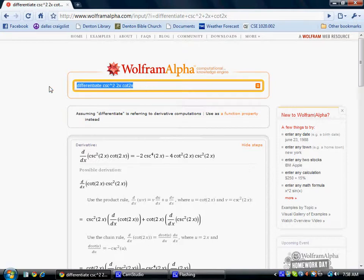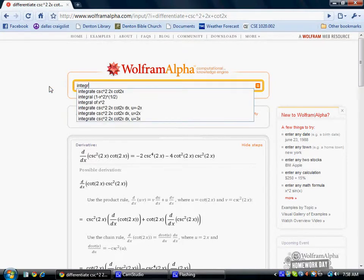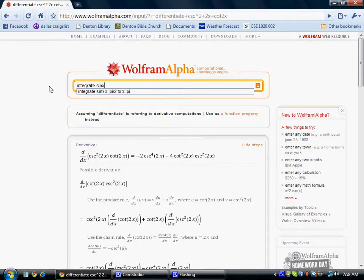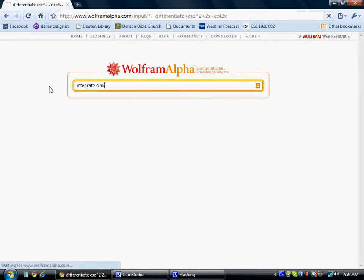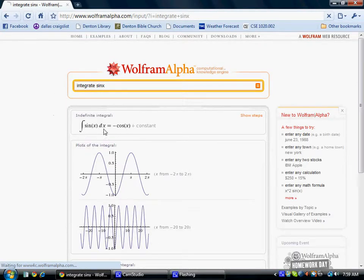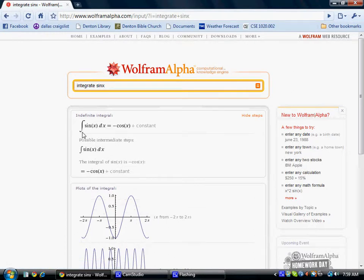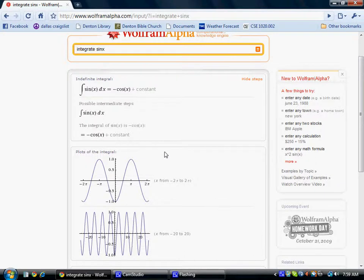You can also say integrate, and I'll just do something like sine x. And you'll see that it gave me the integral sign, sine x dx, and it gave me negative cosine x plus a constant. It shows me a possible intermediate step and two graphs.